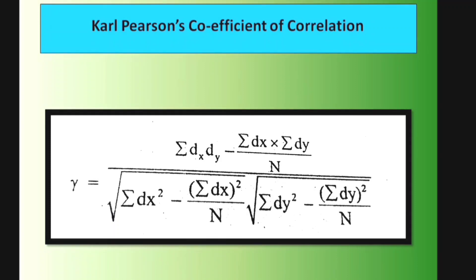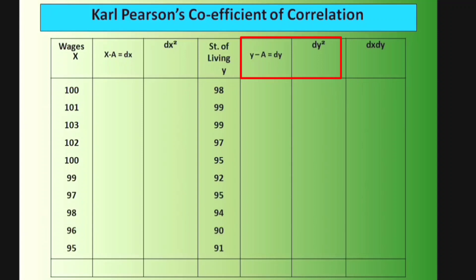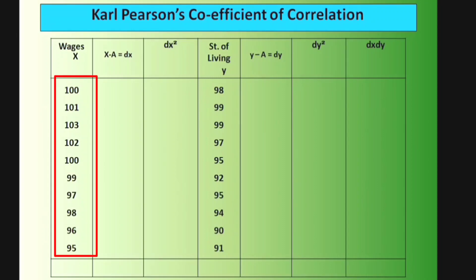In the table, the column pairs for the coefficient of correlation are: X (wages) replaced by dx and dx²; Y (standard of living) replaced by dy and dy²; and a column for dx·dy. The dx value is x minus the assumed mean A, where A equals 100 for X.